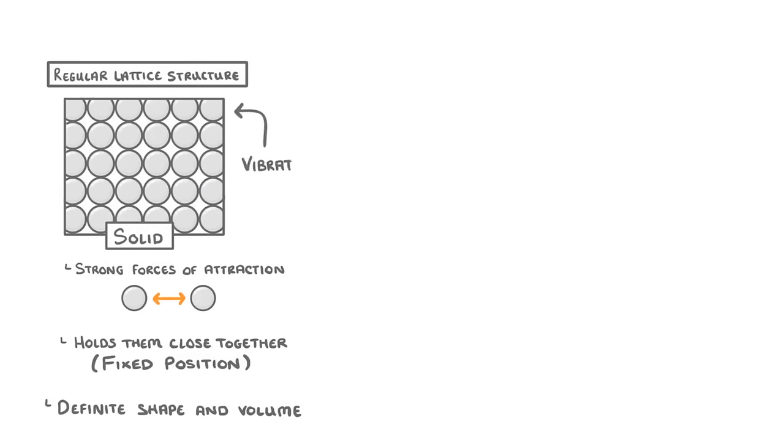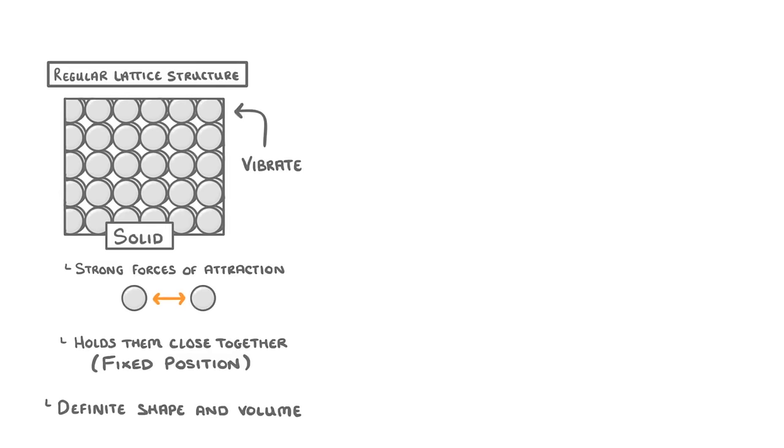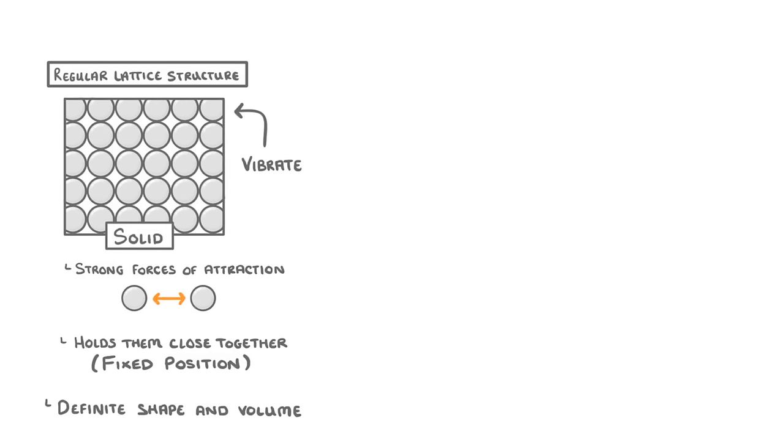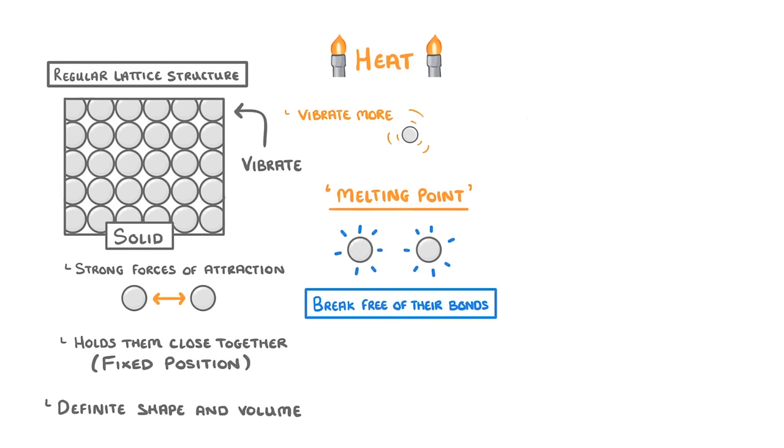The particles can vibrate around though, so you can imagine them constantly jostling against one another. Now if we heat up a solid its particles gain more energy and start to vibrate even more, which weakens the forces between them. At a certain temperature, which we call the melting point, the particles will have enough energy to break free of their bonds and so the solid melts into a liquid.